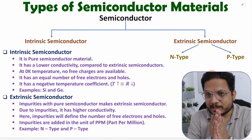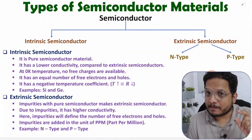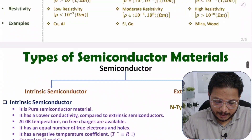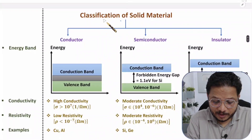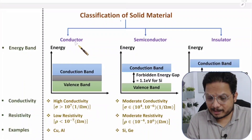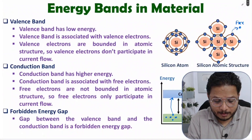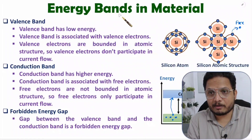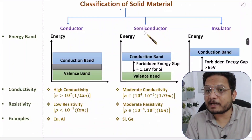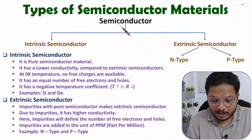Hello friends, welcome to Engineering Panta family. In this video I am going to explain types of semiconductor material. In my last video I explained the classification of solid material — we had three categories: conductor, semiconductor, and insulator — and I explained how energy bands are there with material. In this video I'll explain how semiconductor materials are classified.